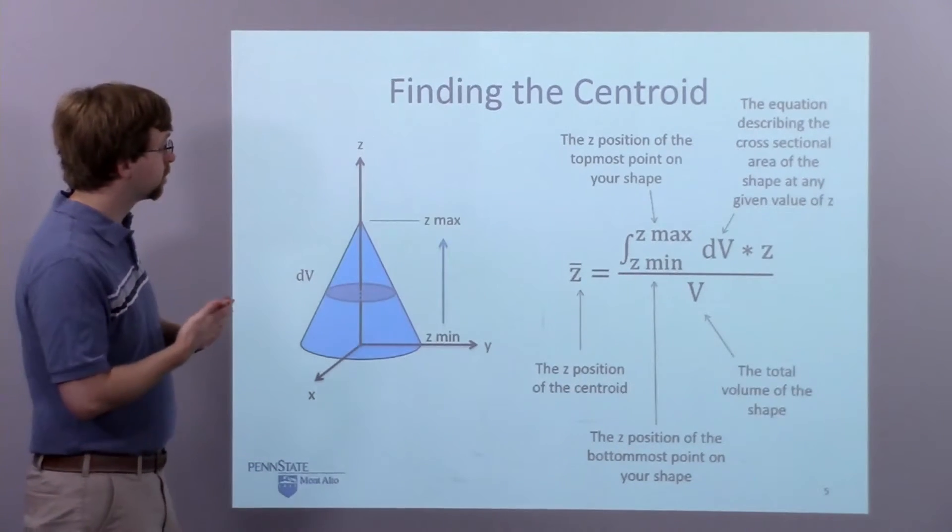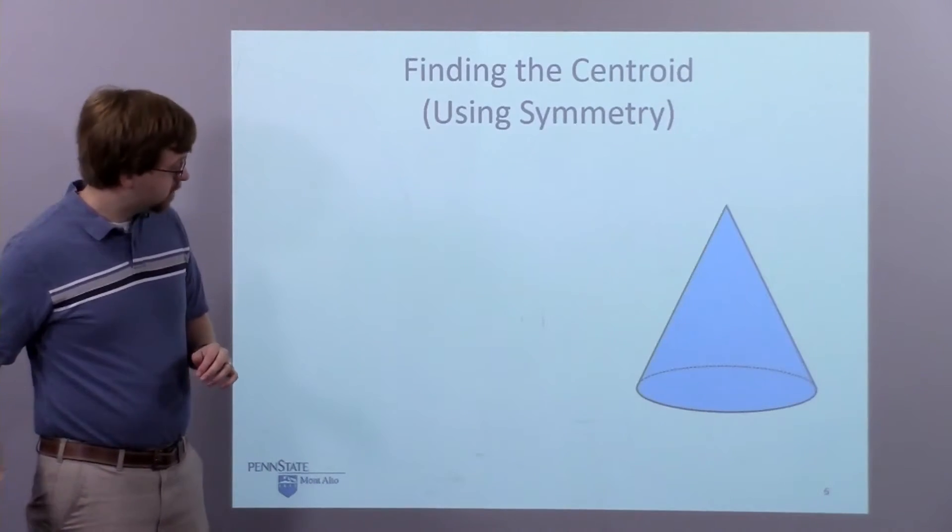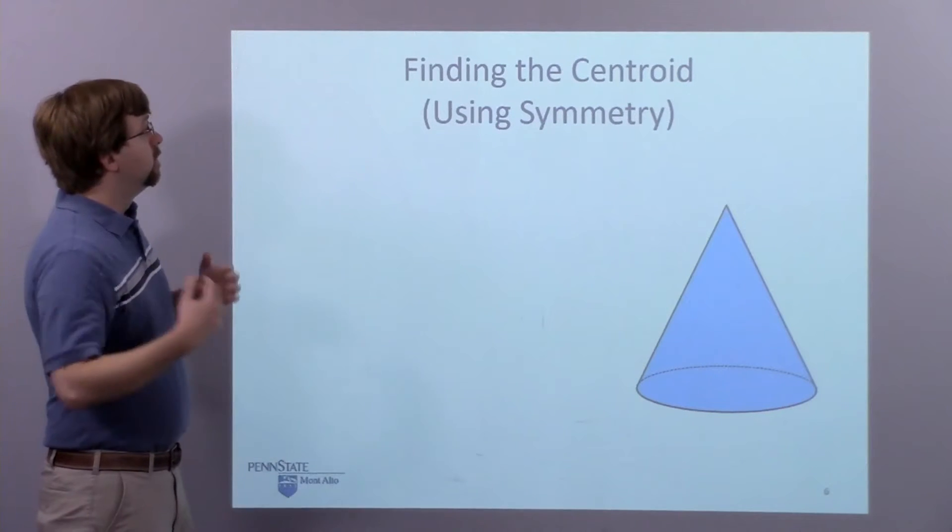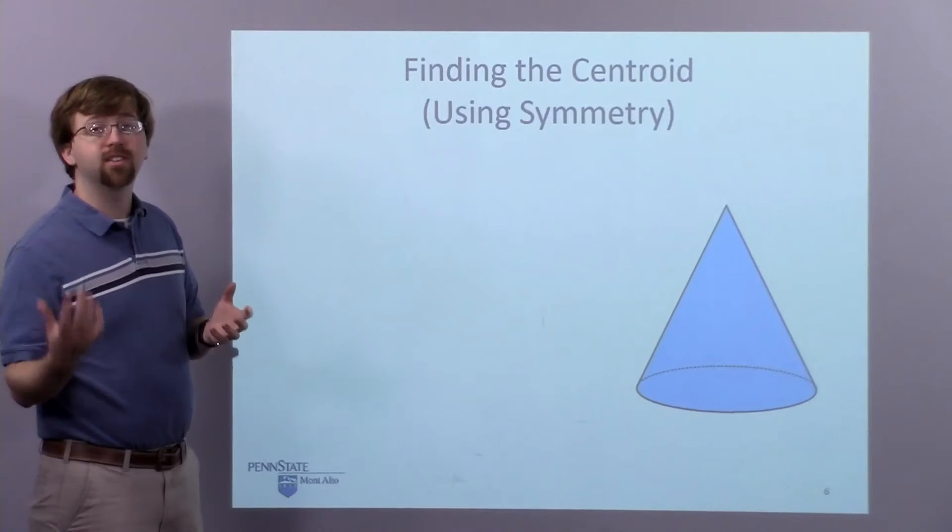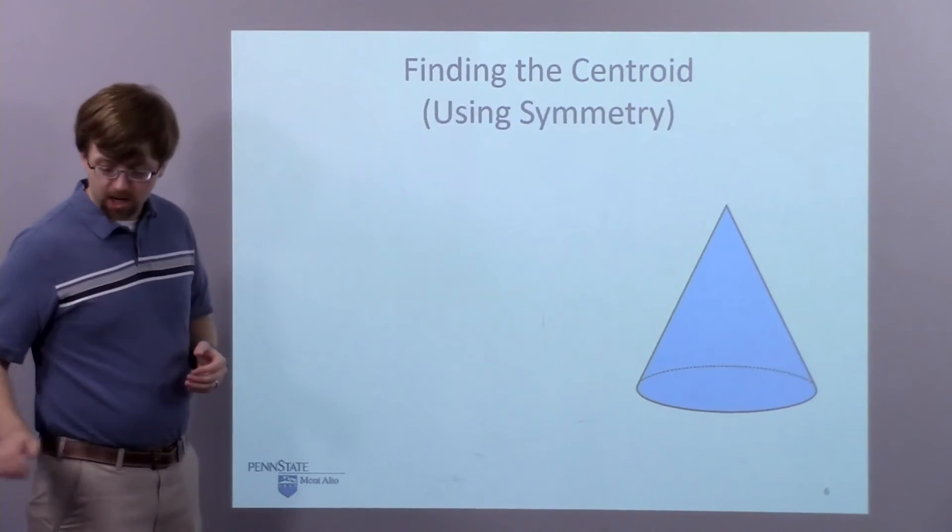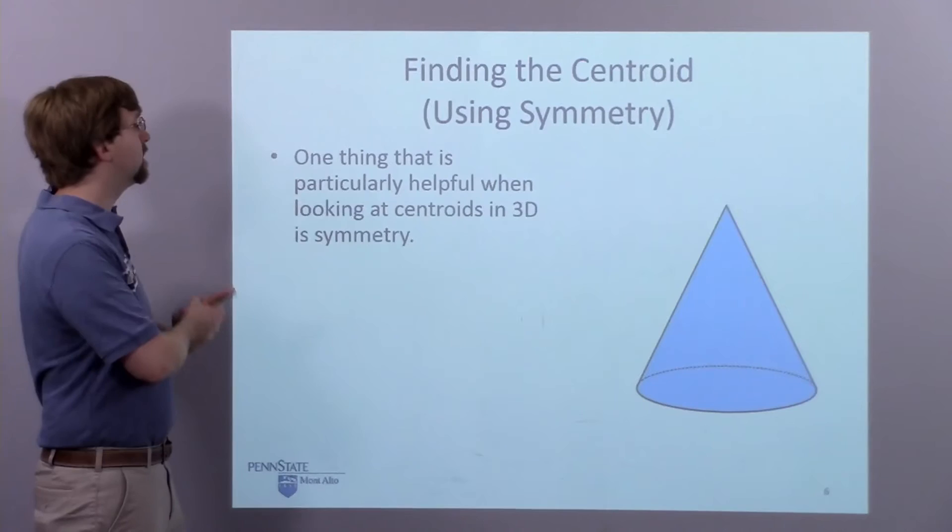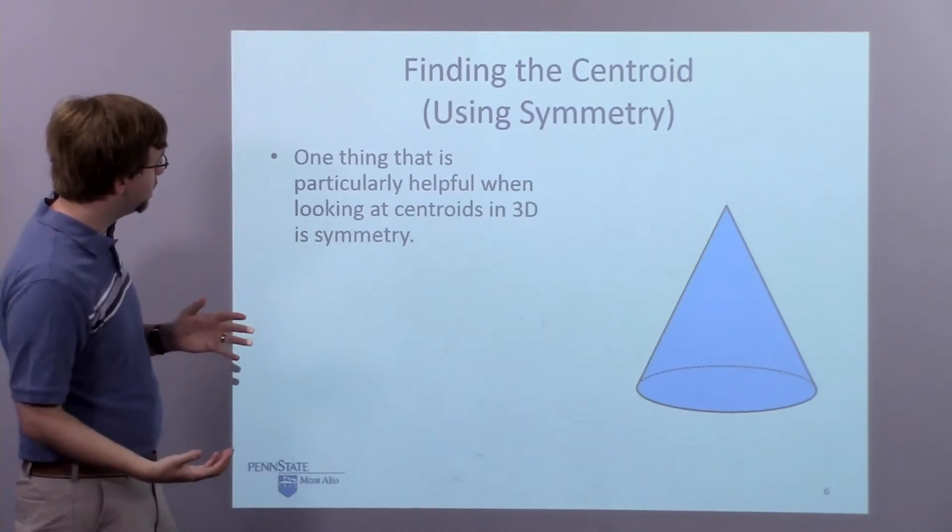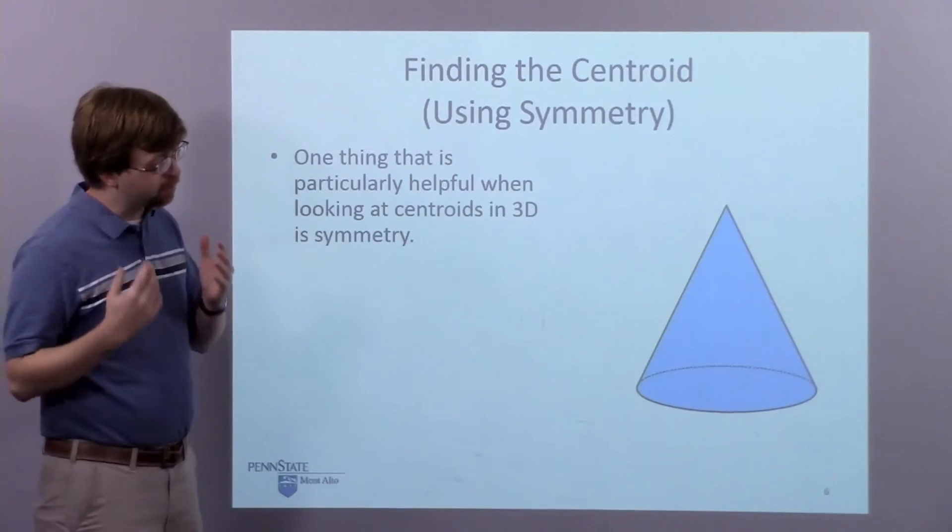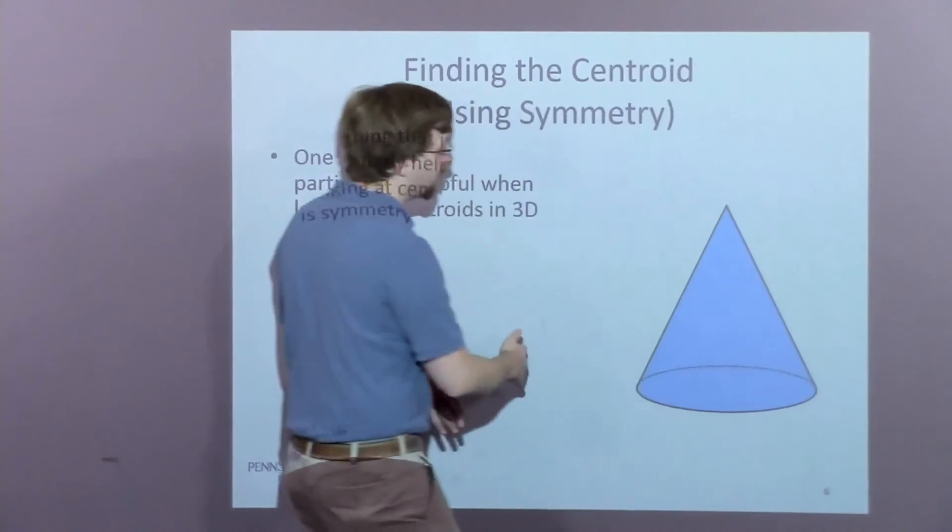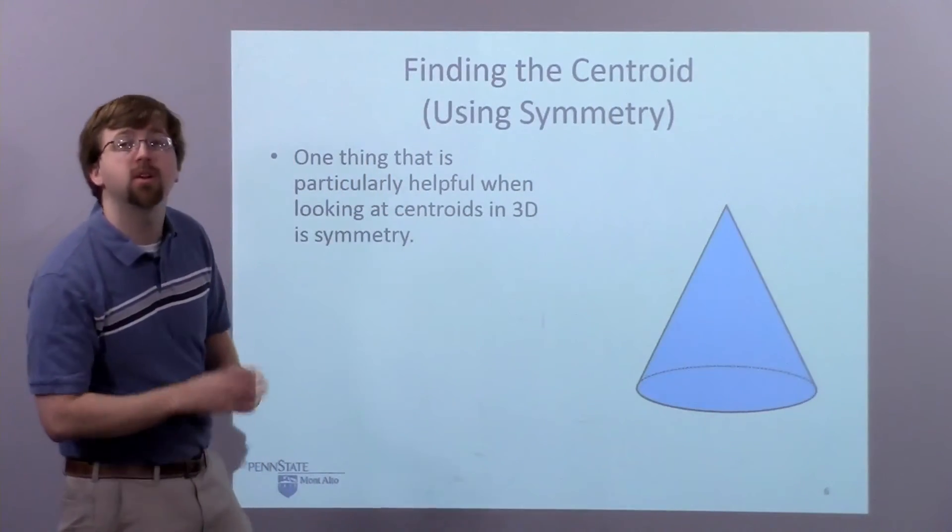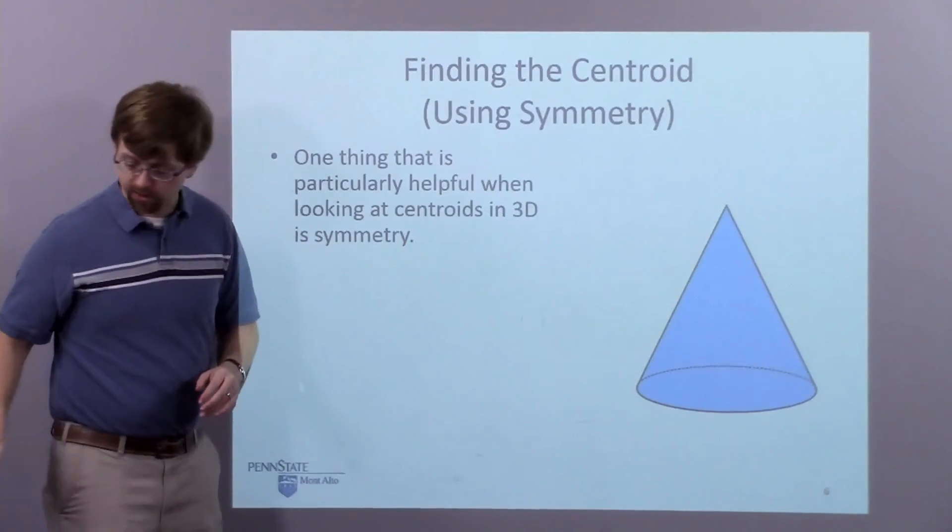All right, so finding the centroid using symmetry, sometimes we can kind of skip some steps here. So one thing that's going to be particularly important with 3D stuff is symmetry. And so with the cone, we'll notice, at the left side and the right side, there are mirror images of each other. The front side and the back side are mirror images of each other.